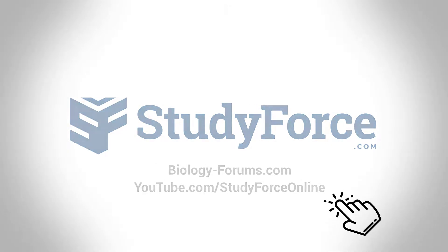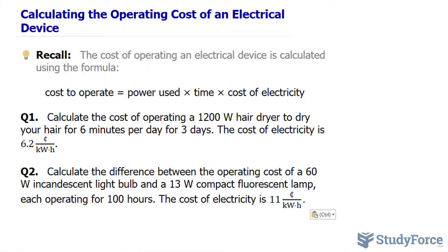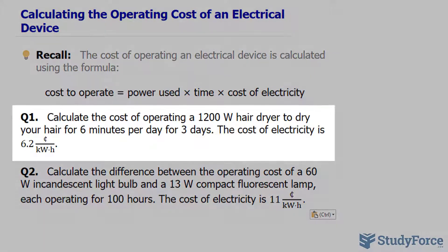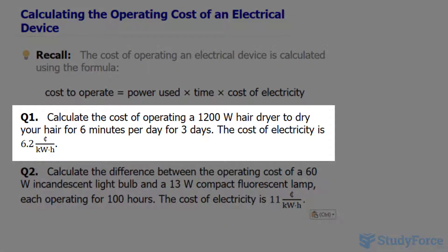In this quick video, I'll show you how to calculate the operating cost of an electrical device. The question reads, calculate the cost of operating a 1200 watt hair dryer to dry your hair for six minutes per day for three days. The cost of electricity is 6.2 cents per kilowatt hour.